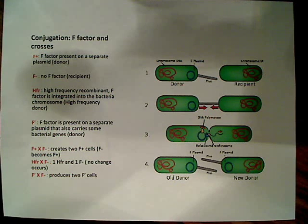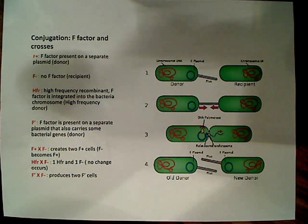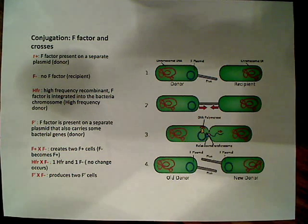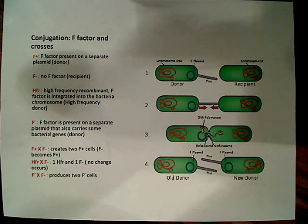HFR crossed with F-minus results in basically no change — one HFR cell and one F-minus cell — because it takes a very long time for the process to fully occur, so the F-factor is never fully transferred. F-prime crossed with F-minus produces two F-prime cells, so a change does occur. The recipients acquire not only the F-factor plasmid and its associated genes, but they also acquire some additional bacterial genes.